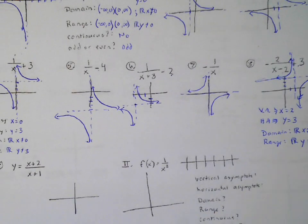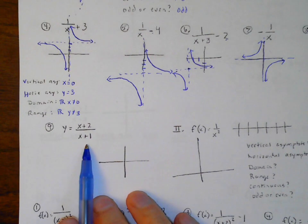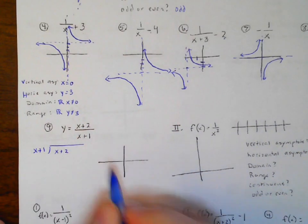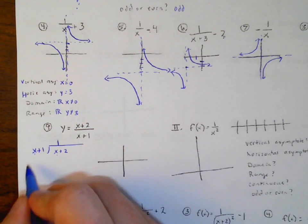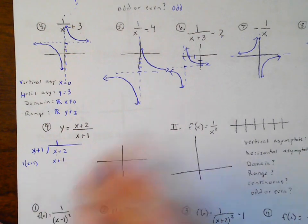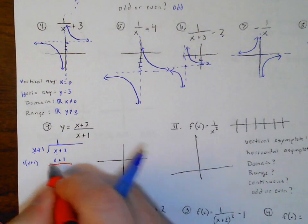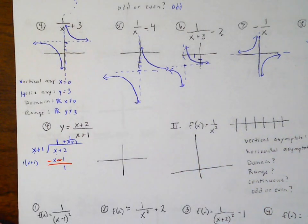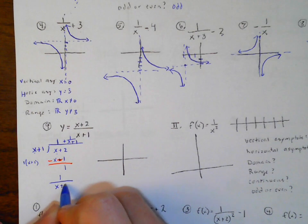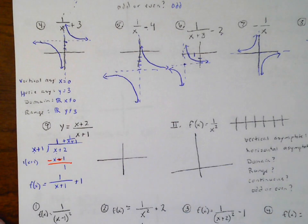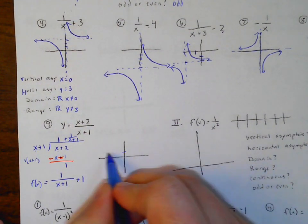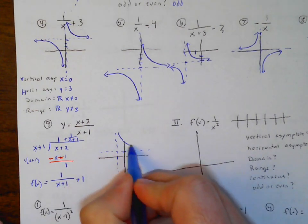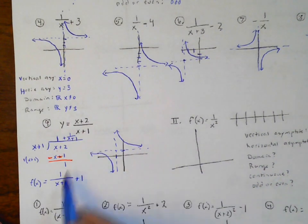What if it's not in that form? If I don't have it in standard form, I have to divide it using long division from last chapter. For example, x goes into x one time; 1 times (x+1) gives x+1; draw the line, change signs to subtract, and I get a remainder of 1. So another way to write this is 1 over (x+1) plus 1, telling me the vertical asymptote shifts to negative 1 and horizontal shifts up 1.